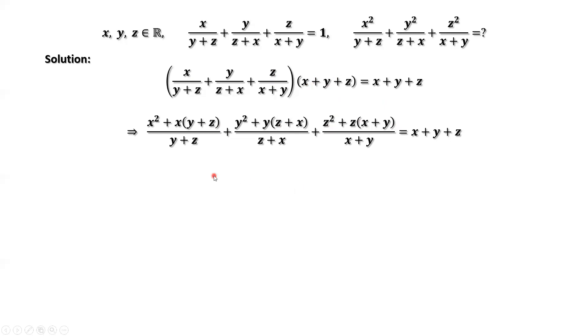Now, we split each term from the left-hand side into two parts. The first part, x squared divided by y plus z. The second part, divided by y plus z, y plus z, cancel each other. The second part, we have x here.